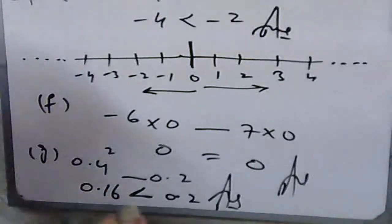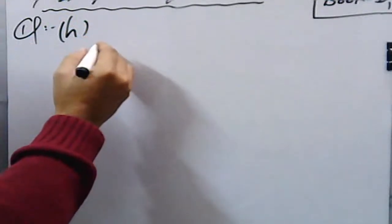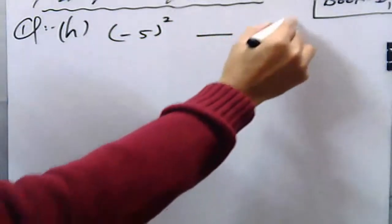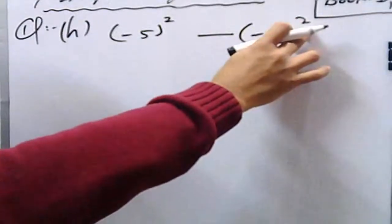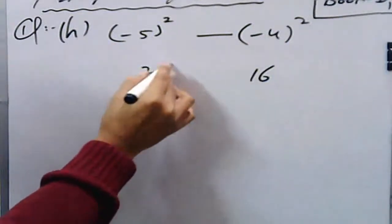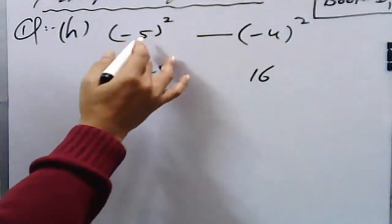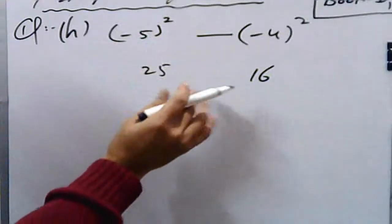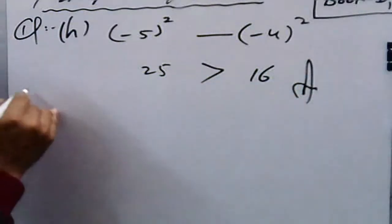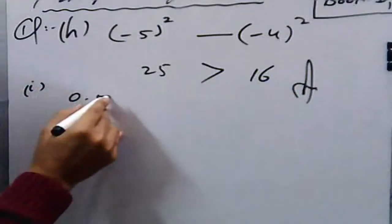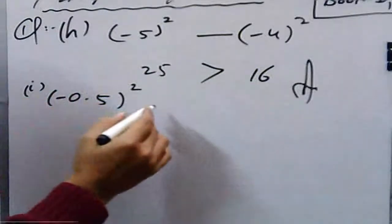In part h: (−5)² dash (−4)². Since the exponent is even, the negative sign is removed. Five squared is 25, four squared is 16, and the negatives are removed due to the even exponent. So 25 is greater than 16.